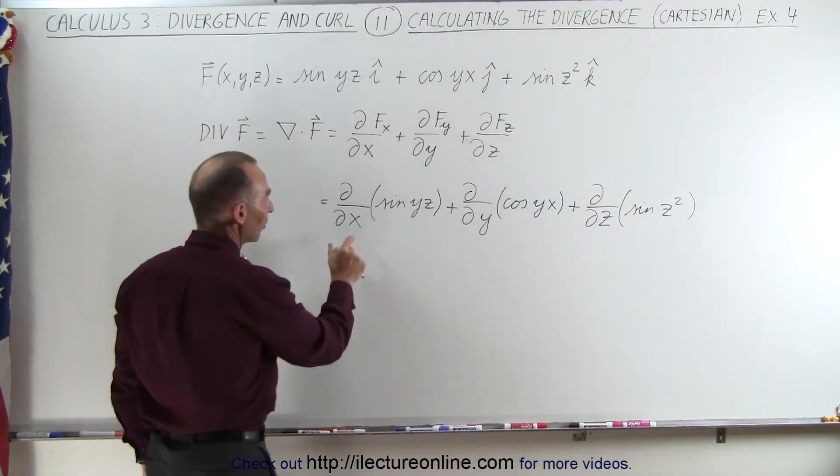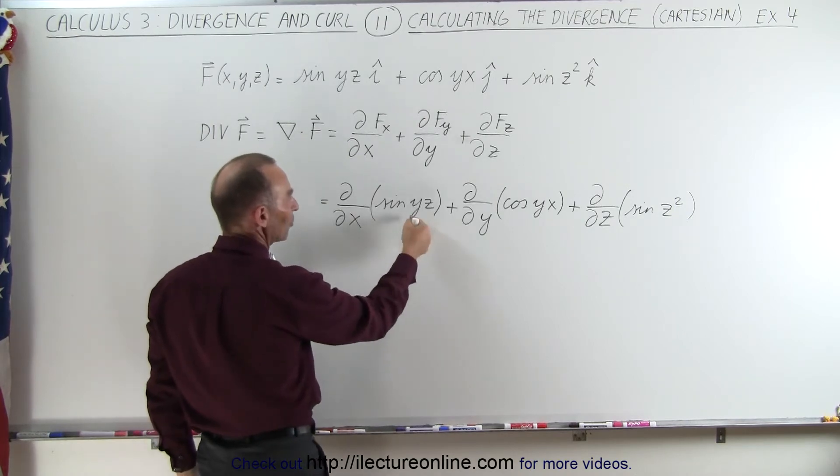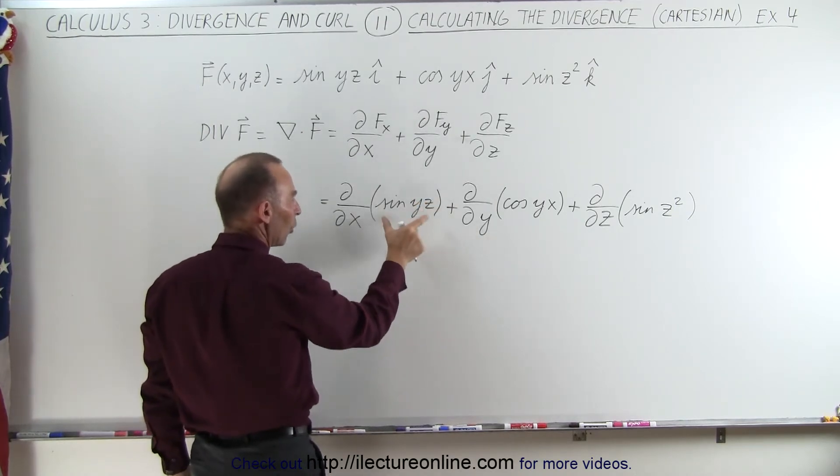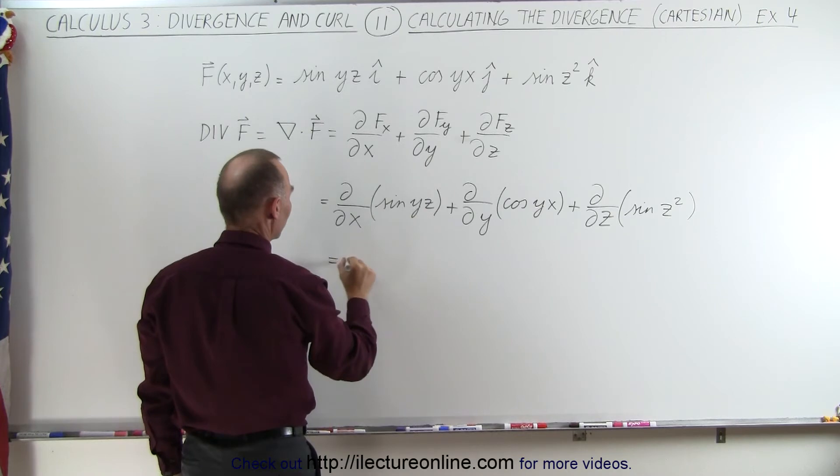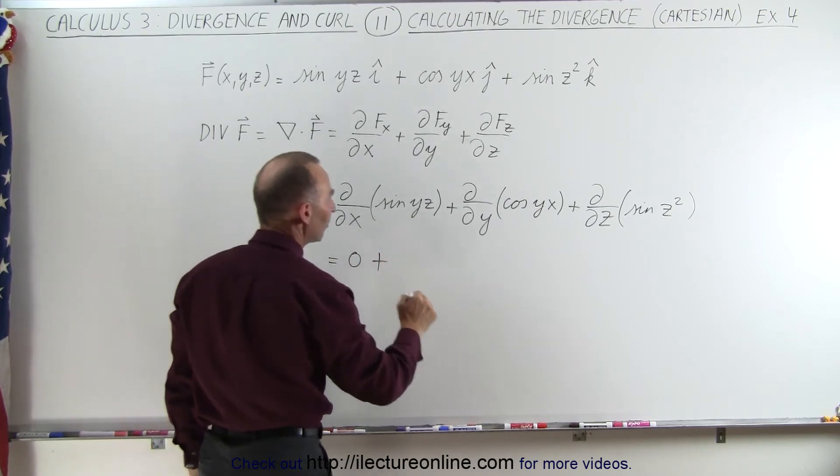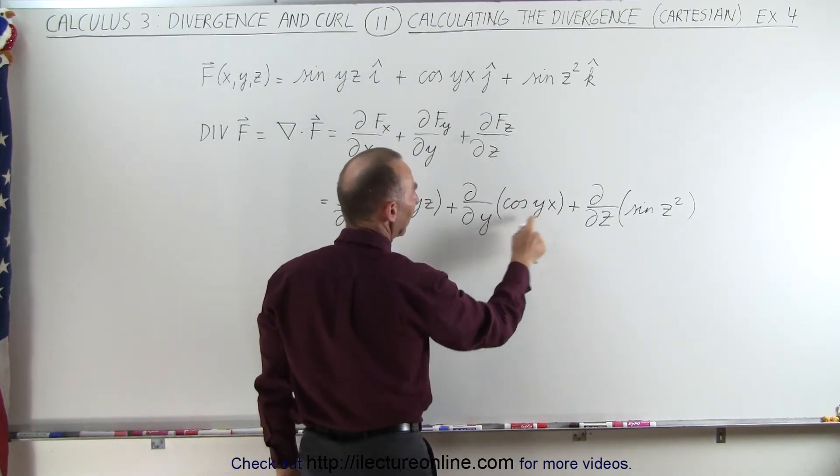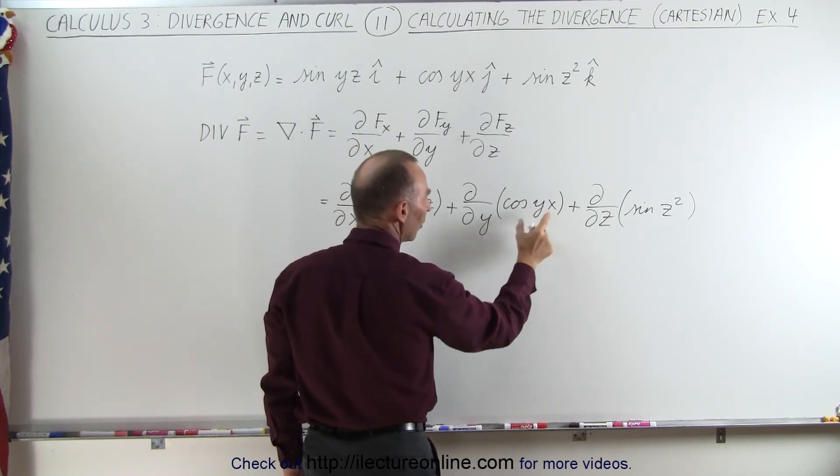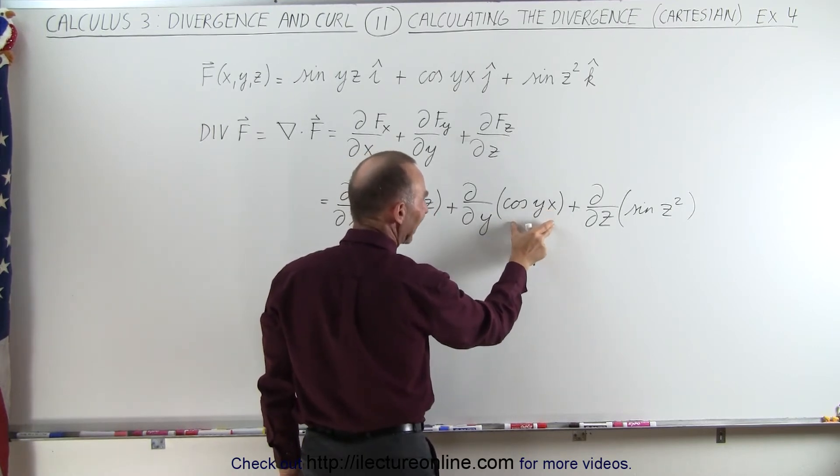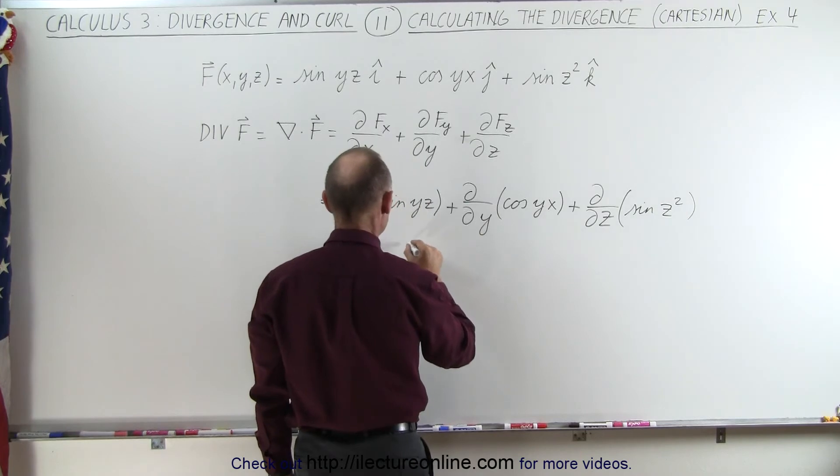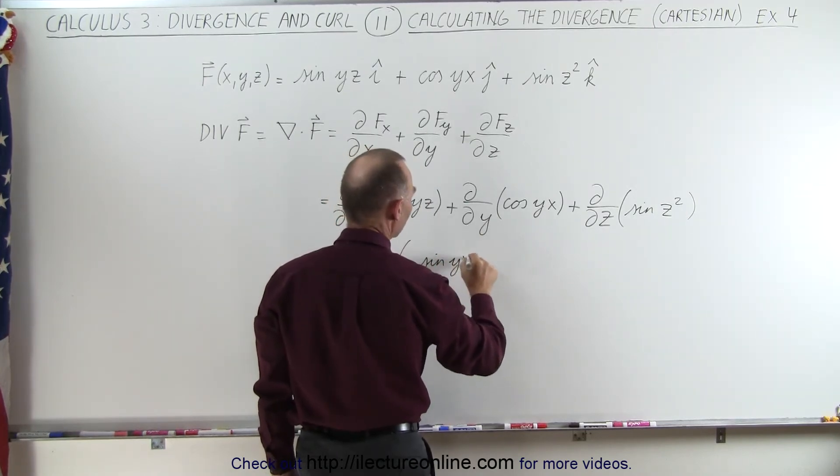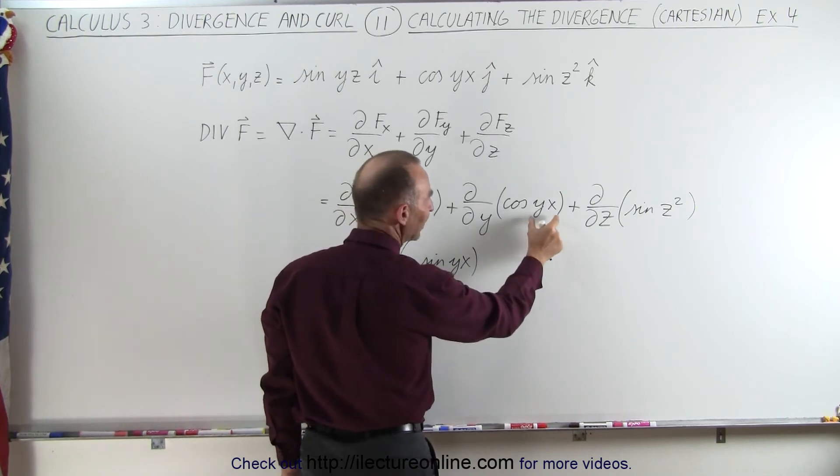Now taking the partial derivative of this with respect to x, notice there's no x variable here, so this whole thing becomes a constant, so this becomes equal to zero. Here, notice that we do have a y, and x becomes the constant. The derivative of cosine is negative sine, so it would be negative sine of yx times the derivative of the angle with respect to y, which simply becomes times x.